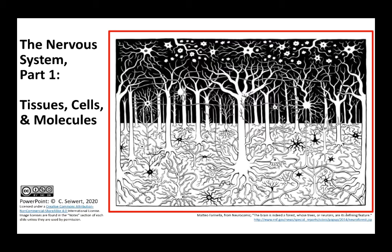Hi folks, welcome to our six-part series of mini lectures on the nervous system in the human body. In the first three videos we're going to focus on the molecular, cellular, and tissue level of organization in the nervous system, including how nerve cells communicate with one another. In the second three videos, we'll focus on the structure and function of parts of the nervous system that are visible to the naked eye.